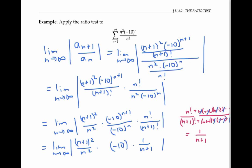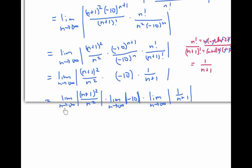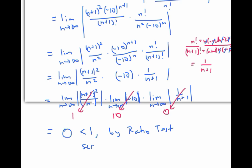I'm going to divide my limit of a product into a product of limits. Now as n goes to infinity, (n+1) over n goes to one, so this expression — which is equivalent to the square of (n+1) over n — also goes to one. The limit of the absolute value of negative 10 is just 10. And the limit as n goes to infinity of one over (n+1) is zero. Therefore, our limit is one times 10 times zero, which is zero. And since zero is less than one, by the ratio test, we know that our series converges absolutely.